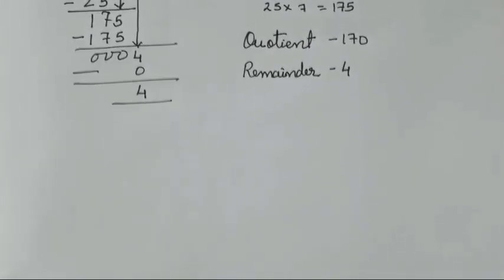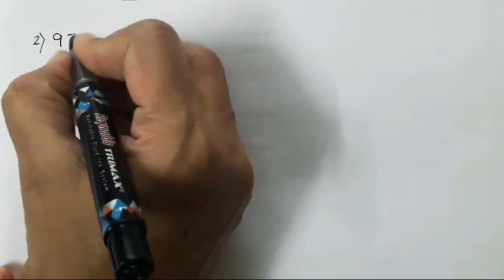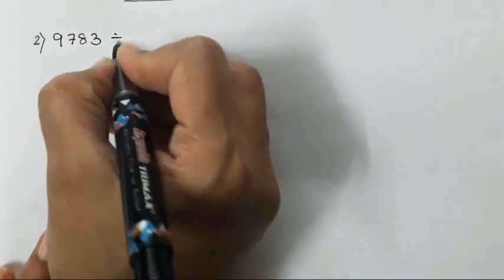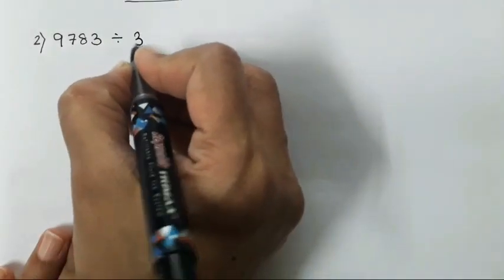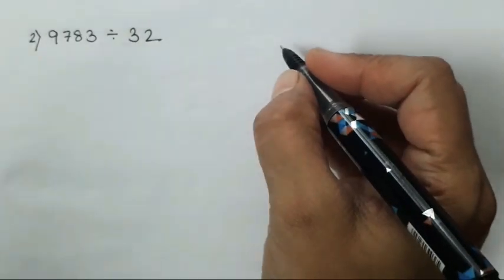I hope that question is clear to everyone. I will explain one more sum for students who still haven't got it, because division is not easy for everyone — that's exactly why I made this video. The next sum is 9783 divided by 32.